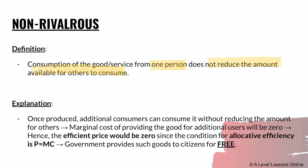Non-rivalrous means that once produced, additional consumers can consume the good without reducing the amount available for others. Hence, the marginal cost — the additional cost of providing the good for additional users — will be zero. If you produce one street lamp, the additional cost of providing it for another person is zero because you don't need to produce another lamp. Hence, the efficient price would be zero, and since allocative efficiency requires P equals MC, this condition is met at a price of zero.